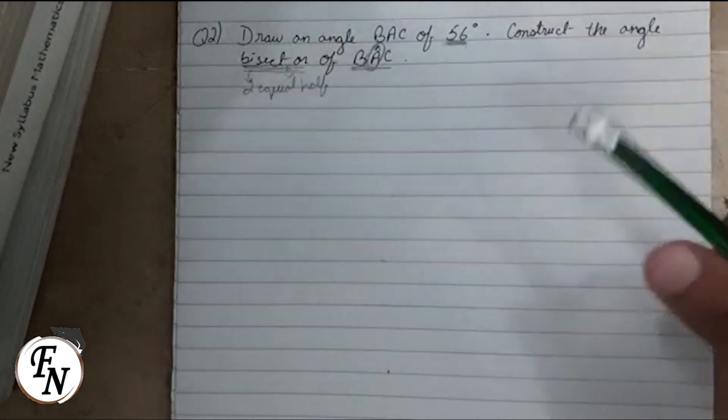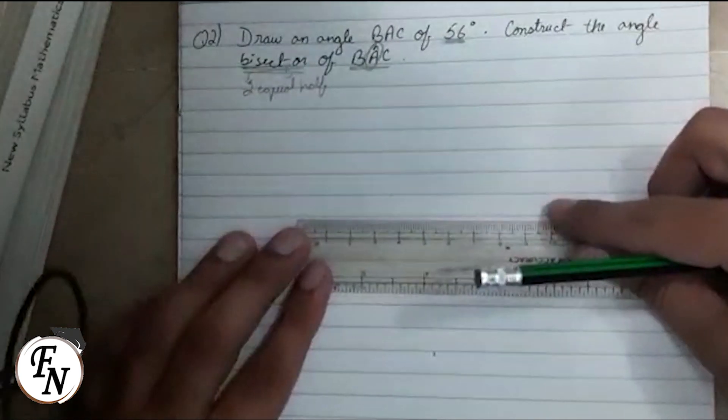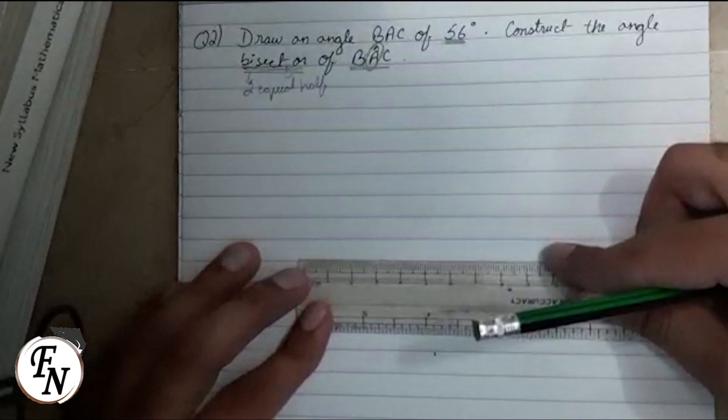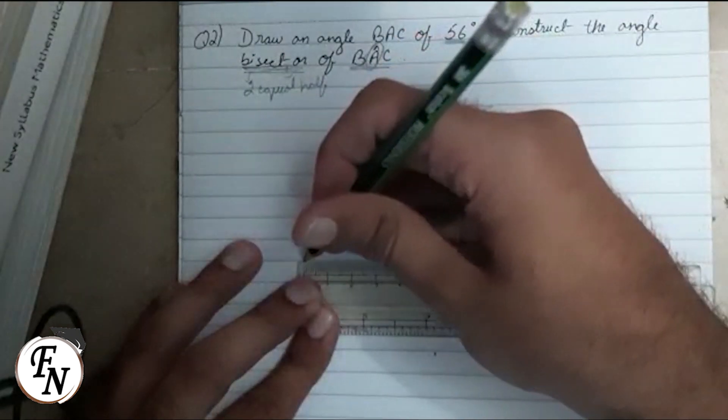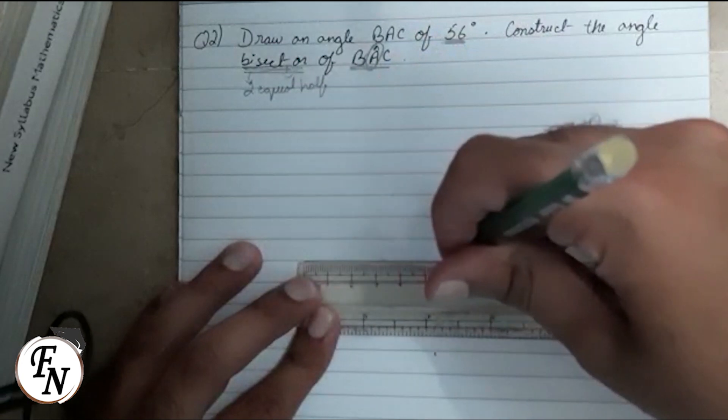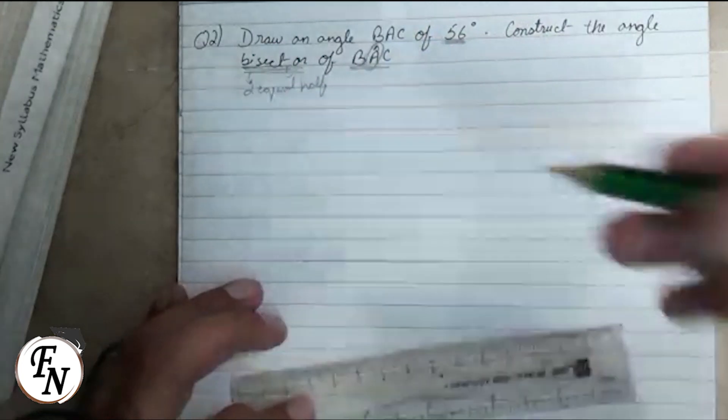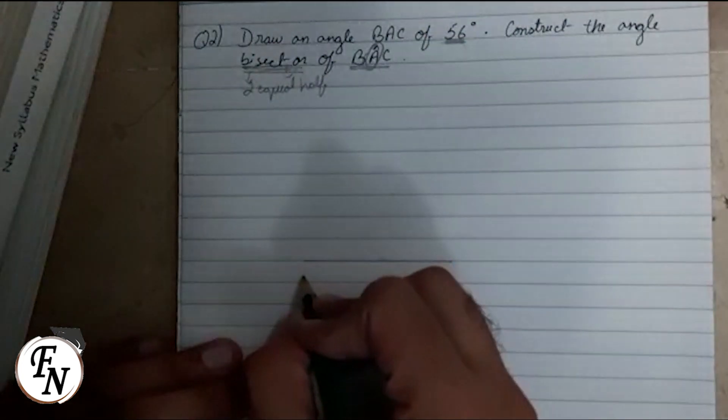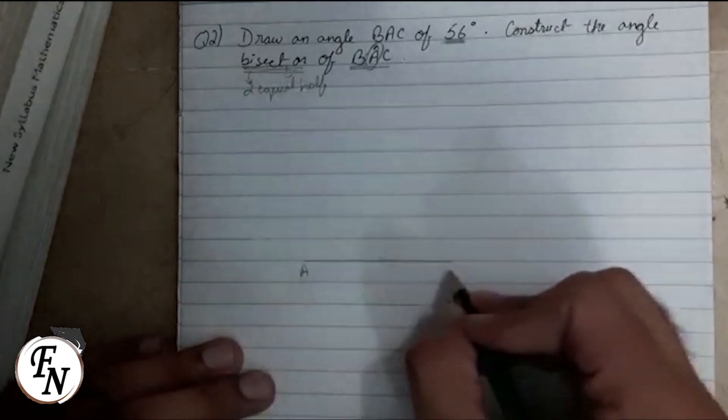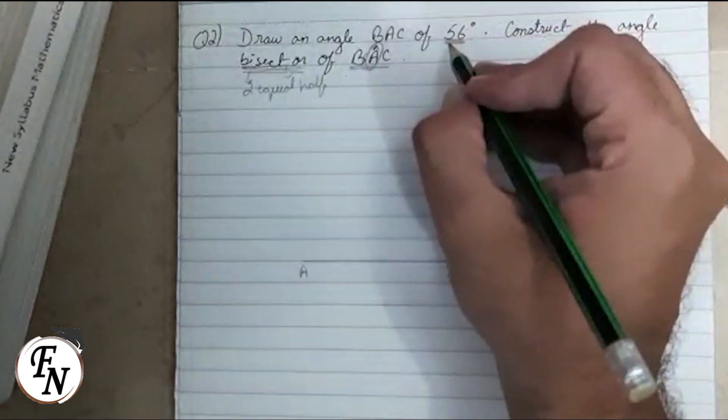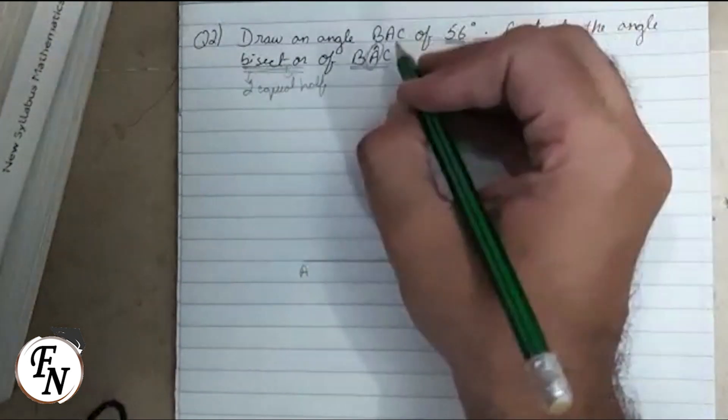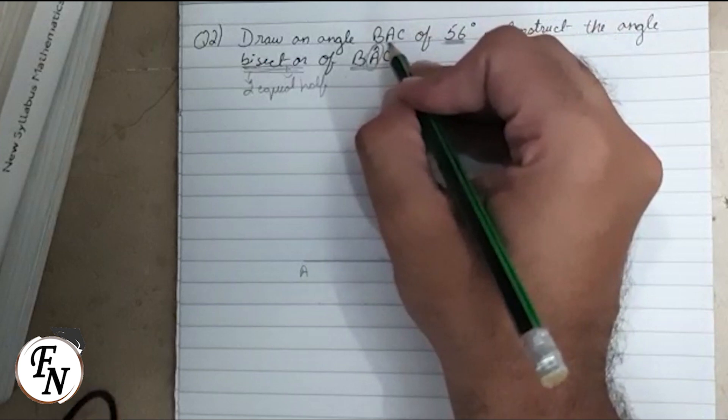In order to do that, we will first draw a straight line of any desired length. In this case, I am drawing it for six centimeters and we will name it AB. Now we need to draw 56 degrees angle at point A, which is the center alphabet.